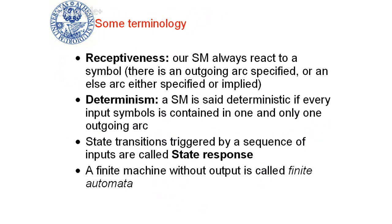Under the rules given, our state machines will always react to a symbol in some way — either by stuttering, by staying within the same state in a self-loop, or by an explicit transition. We are going to start with state machines that are deterministic. A deterministic state machine is one in which, for every state, each input symbol is used as a label to one and only one outgoing arc. This means the state update and output update are functions — for each possible input, they have only one output.